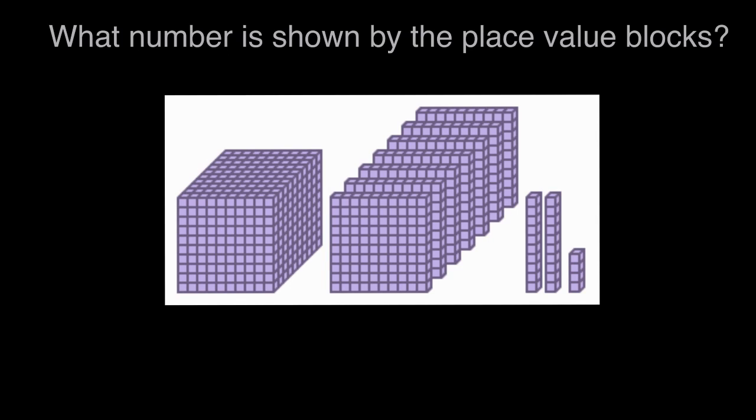And now we can look at it together. Let's remember this is ones, tens, hundreds, and thousands. So looking at our ones, we have one, two, three, four ones. Four ones.